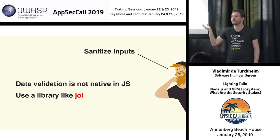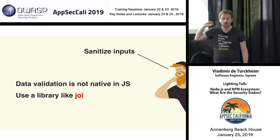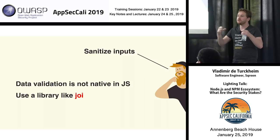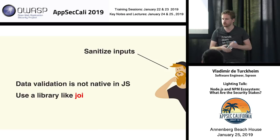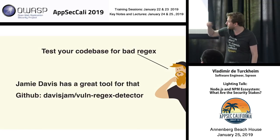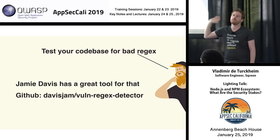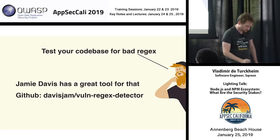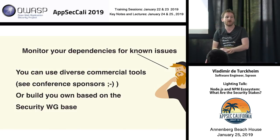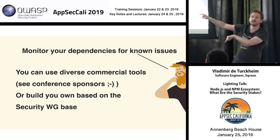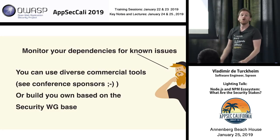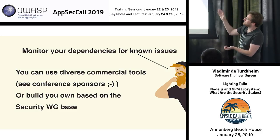Sanitize your inputs to prevent NoSQL injection as I showed you. I recommend using the Joi module — not only because it's made by a friend, but because it's high quality and its dependency tree is small; you don't get thousands of modules when you download it. Test your code for bad regexes — there's a cool tool by Jamie Davis that scans your codebase for vulnerable regexes, it's on GitHub. Also, monitor your dependencies for known issues using our open-source database on GitHub, or use one of the companies near the pool doing that professionally with dedicated security researchers.